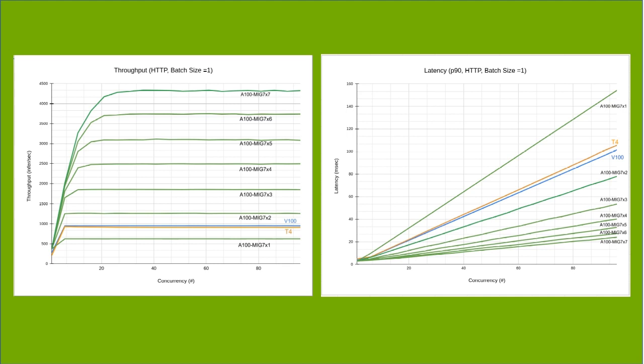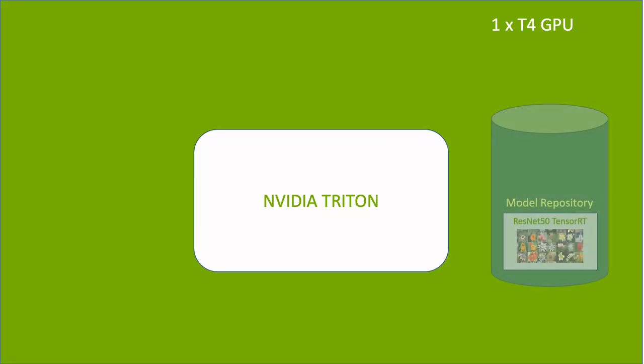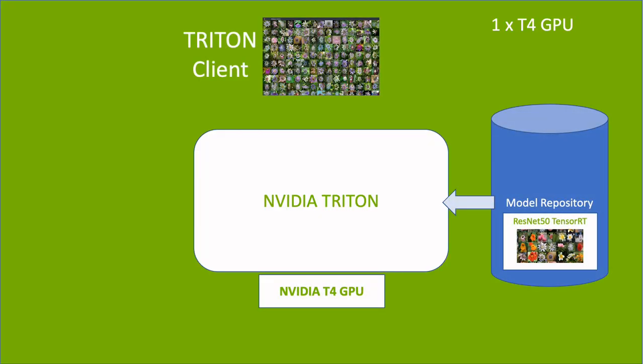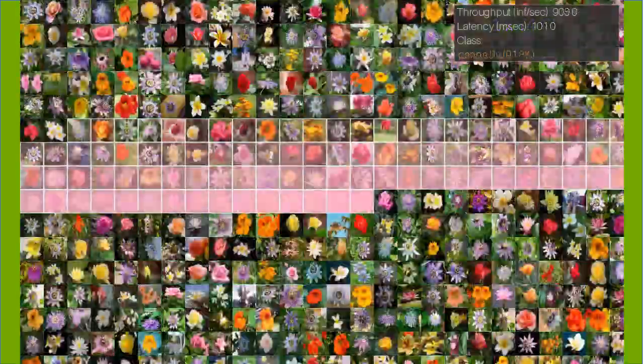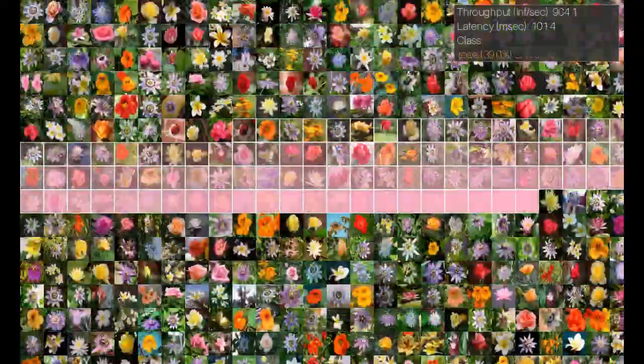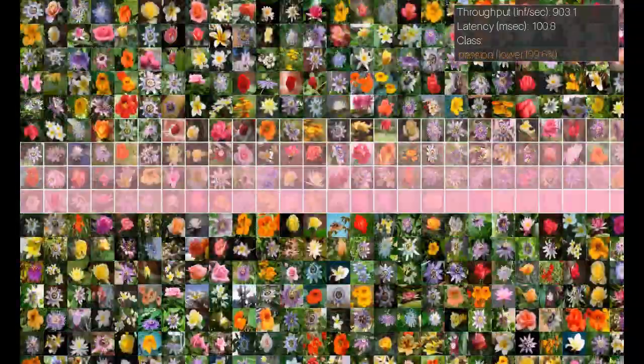First, let's look at a case with one whole T4 GPU. An NVIDIA Triton instance runs inference on the ResNet-50 model on the T4 GPU. The Triton client loads a grid of flower images and sends inference requests so that a constant number of requests are kept automatically active and sent to Triton, and results are displayed in the order as they are received from the server. We can see the inference throughput is around 910 inferences per second.